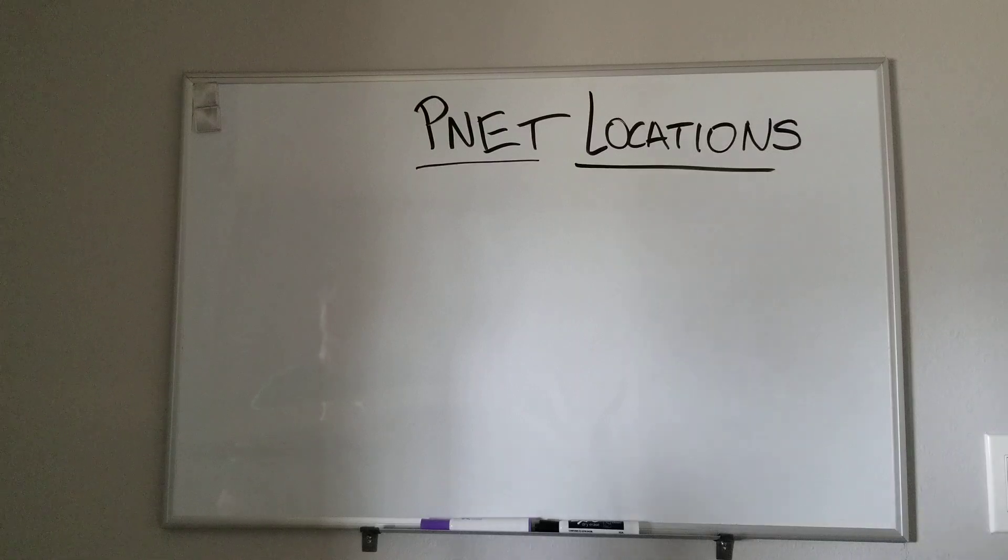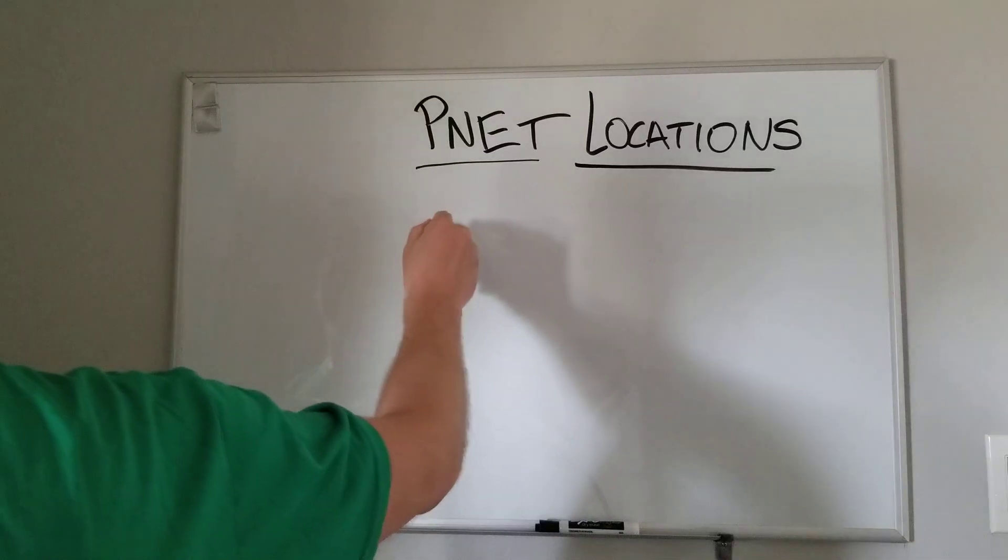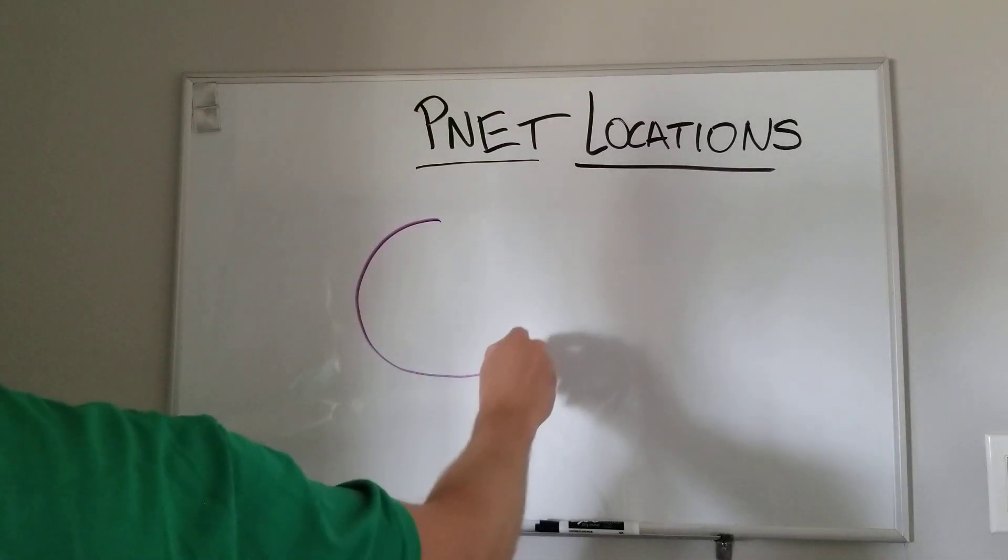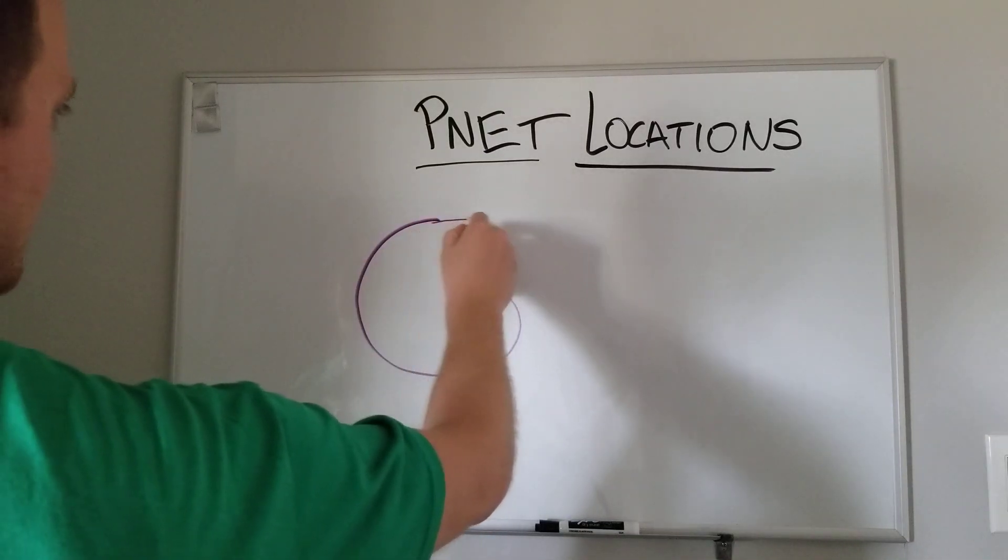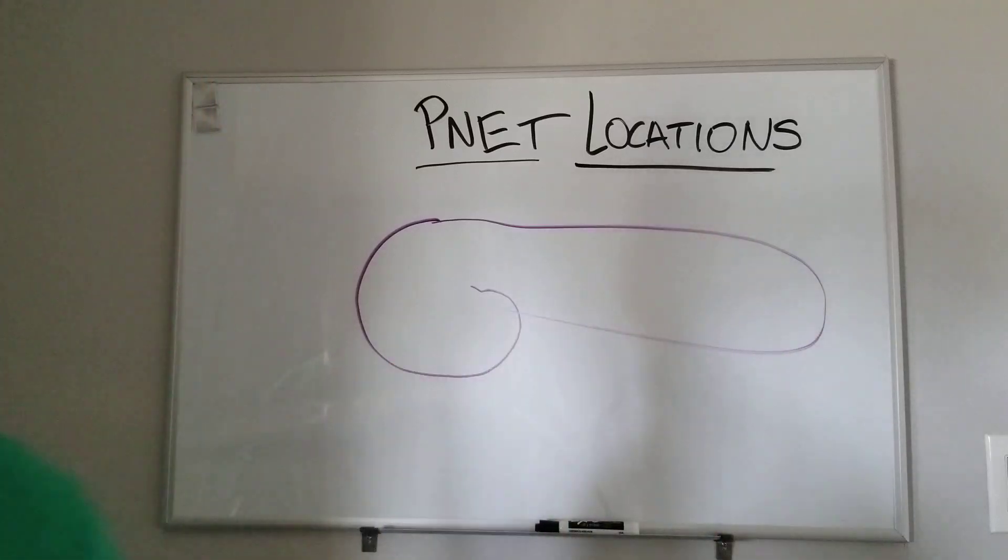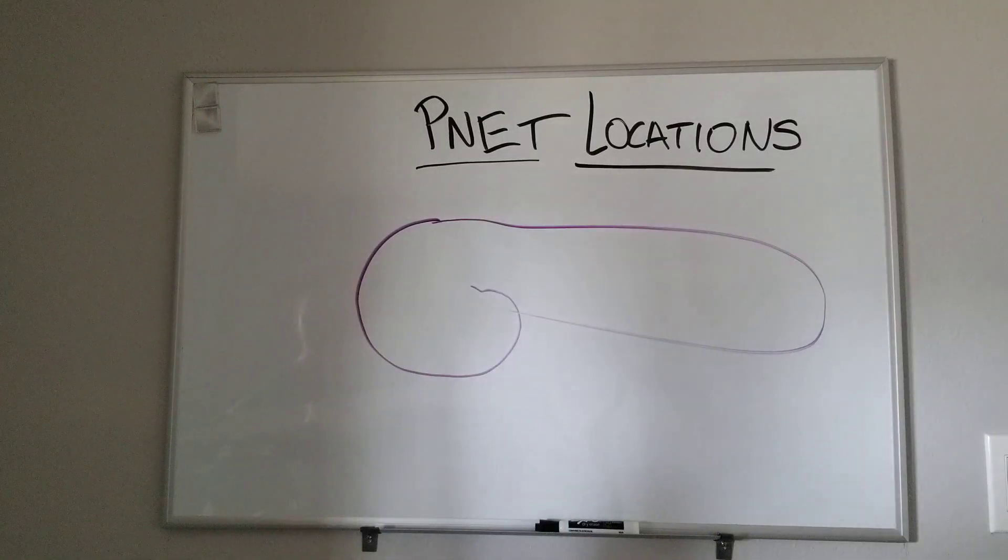The thing to remember is what we're really trying to do is simulate a pancreas. So we have neck, head, uncinate, and then tail, or body tail.